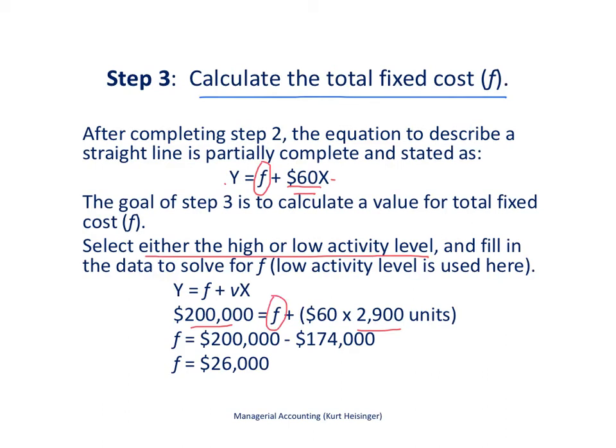And what you see here is that the total fixed cost is $200,000 minus $174,000, that comes from up here, this $60 times 2,900 units. And we get the resulting total fixed cost of $26,000. So now we have what we need to formulate the equation, which I will show you on the next slide.